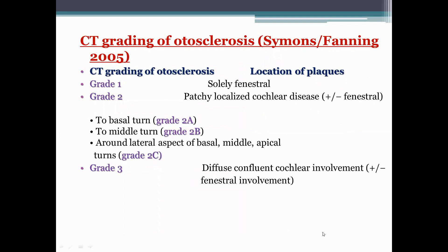Now let's go to the CT grading of otosclerosis. As per Simons and Fanning in 2005, the grading of otosclerosis ranges from grade 1 to grade 3. Grade 1 is solely fenestral, meaning the location of the foci or plaques is solely in the fenestral area. In grade 2, there is patchy localized cochlear disease with or without fenestral involvement. Grade 2 is further divided into grade 2a, 2b, and 2c: grade 2a is involvement of the basal turn, grade 2b is involvement of the middle turn, and grade 2c is involvement around the lateral aspect of the basal, middle, and apical turns of the cochlea. In grade 3, there is diffuse confluent cochlear involvement with or without fenestral involvement.